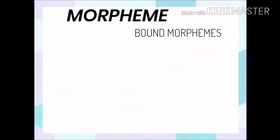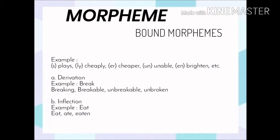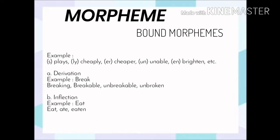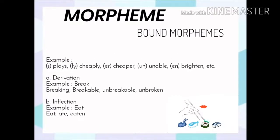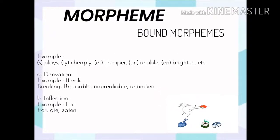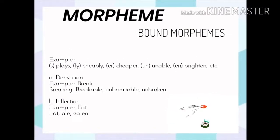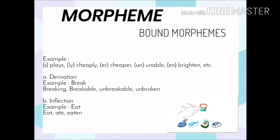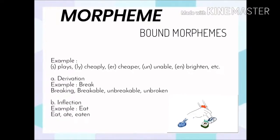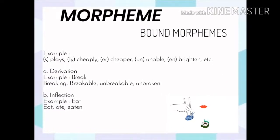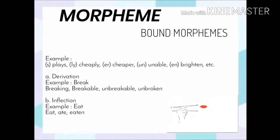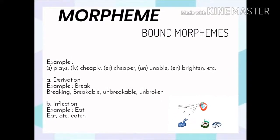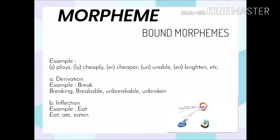The second, bound morpheme, is a morpheme that cannot be uttered alone with meaning. It always attaches to one or more morphemes to form a word. For example: place, cheaply, cheaper, unable, brightened, etc.